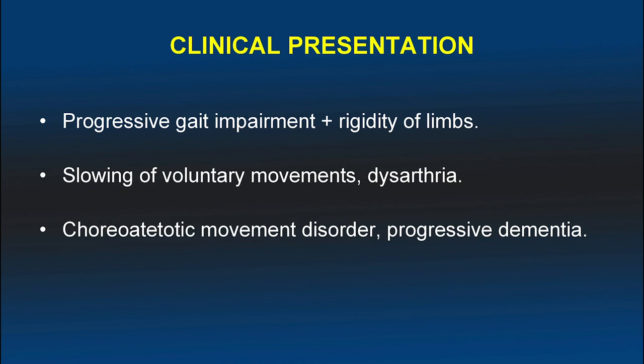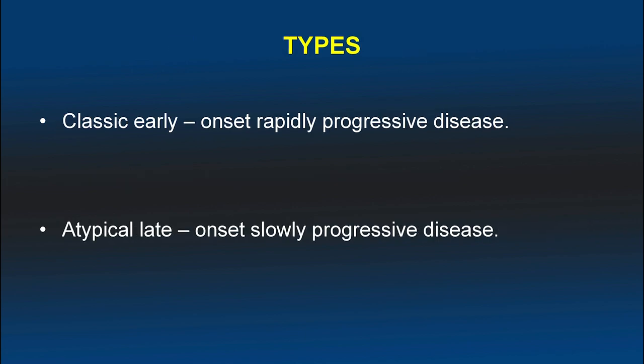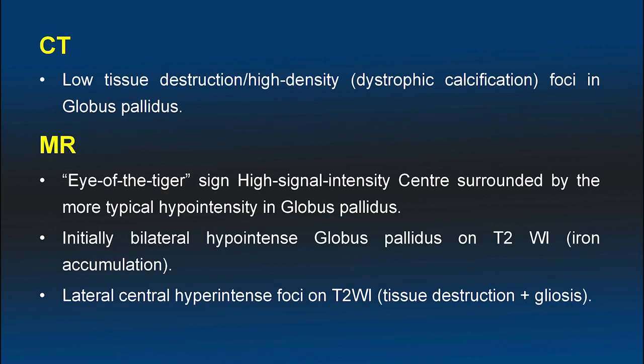These patients present with progressive gait impairment, rigidity of limbs, involuntary movements, and dysarthria, as in our case. Choreoathetotic movements and progressive dementia can also be found. There are two types: the classic form with early onset and rapid progression, and the atypical form with late onset and slow progression.